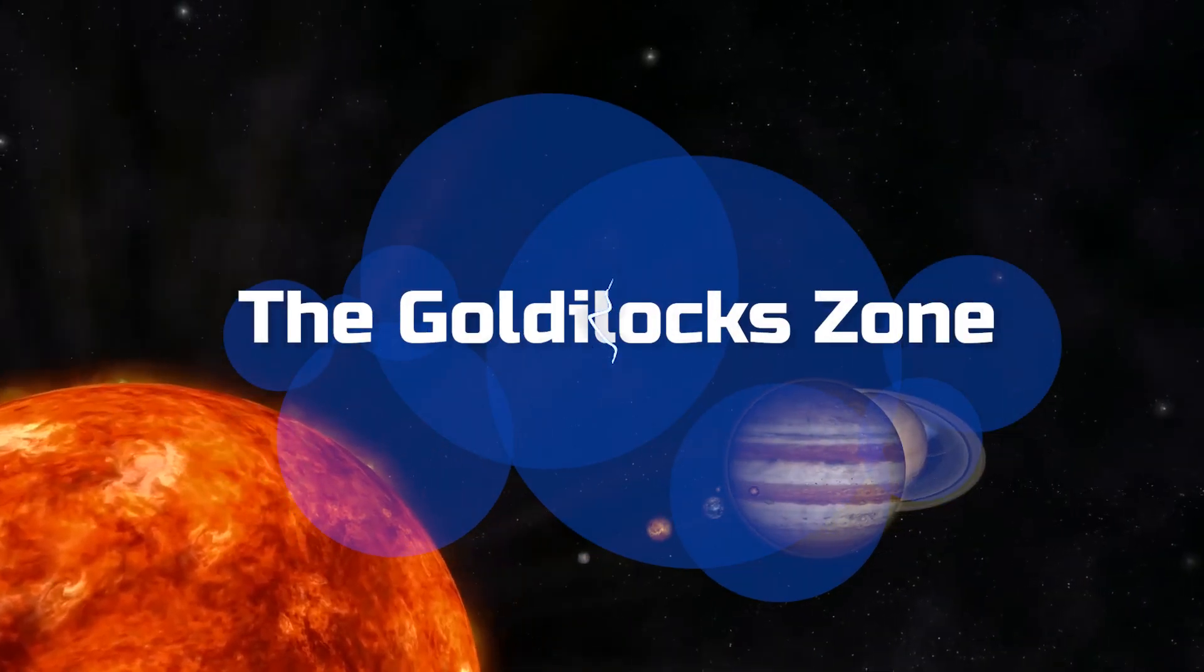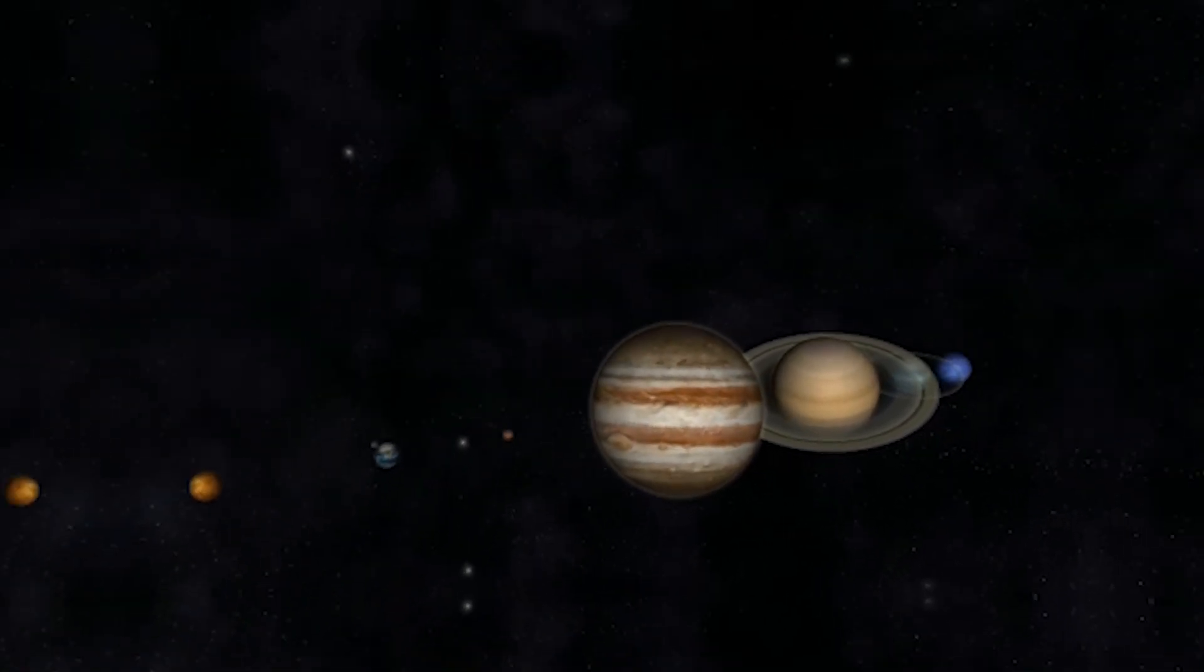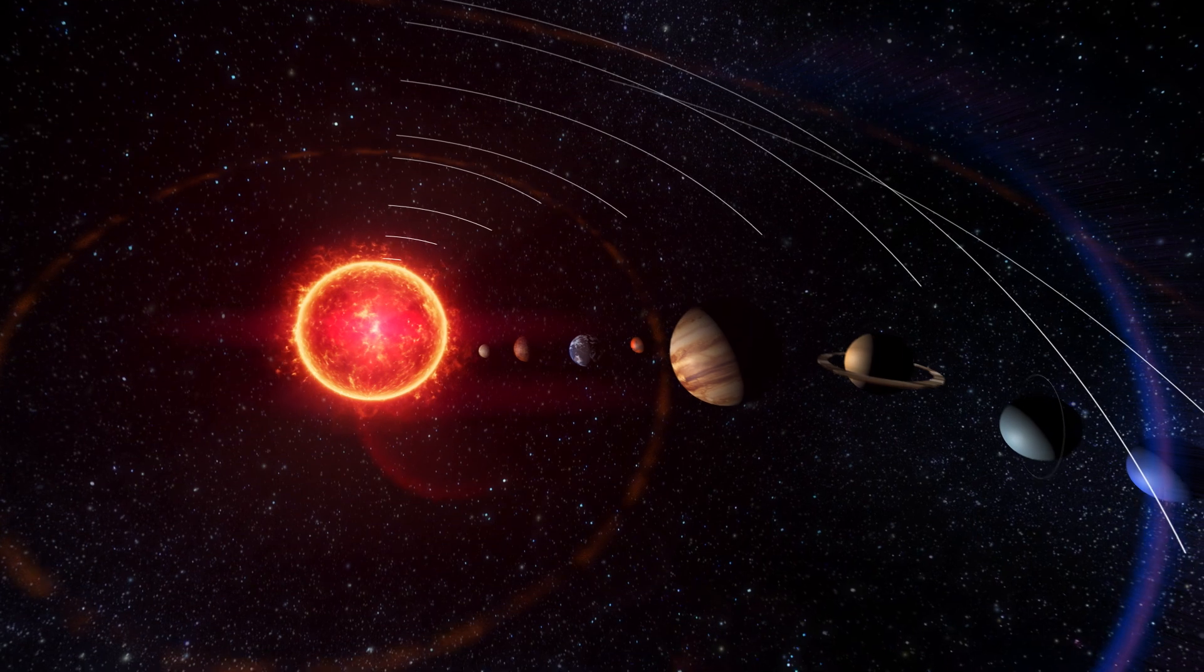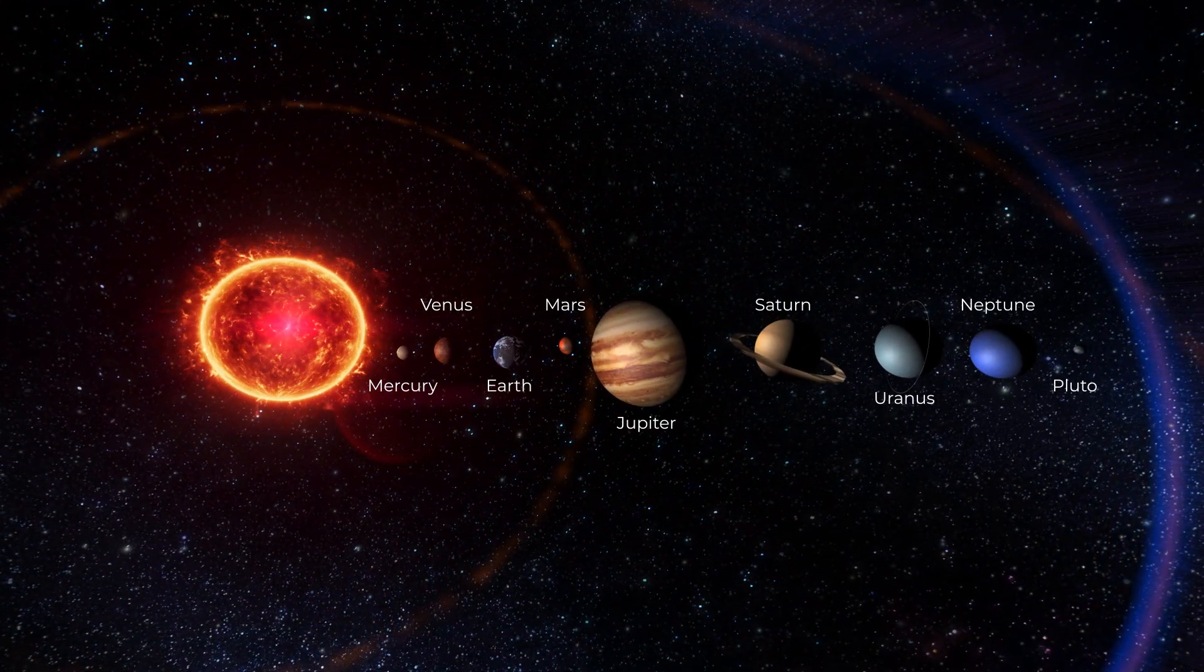Number 4: The Goldilocks Zone. At number 4, let's talk about the Goldilocks Zone, not too hot, not too cold, just right for life. Discover how planets in this habitable zone might be the perfect cosmic real estate for the existence of extraterrestrial lifeforms.